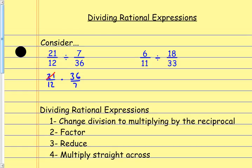Now it's a multiplication problem. I do the same kind of reducing — I cross-reduce: the 21 and the 7 reduce to a 3 and a 1, and I cross-reduce here to a 1 and a 3. Now I multiply straight across and that gives me 9 over 1, which is just 9.